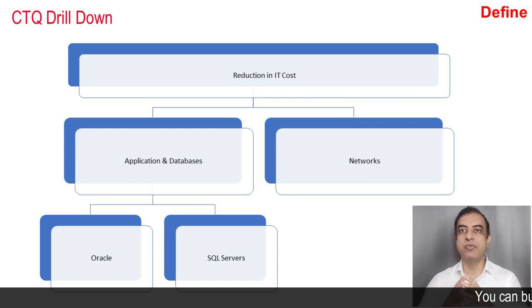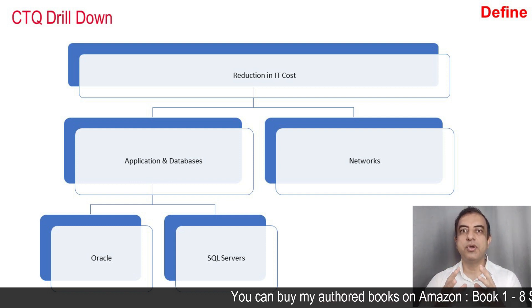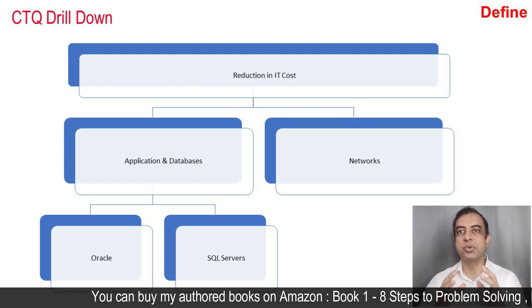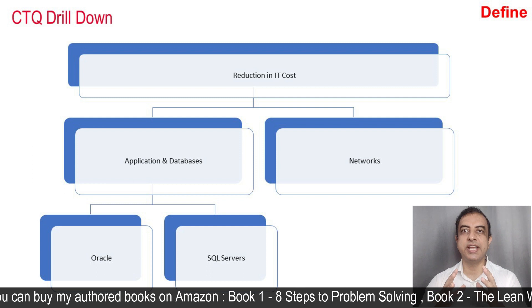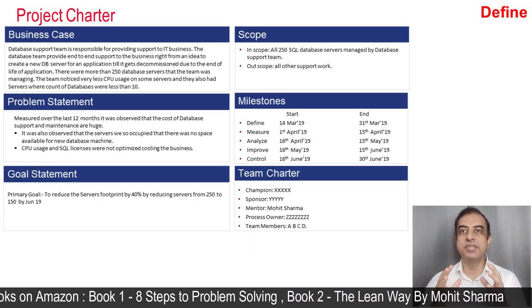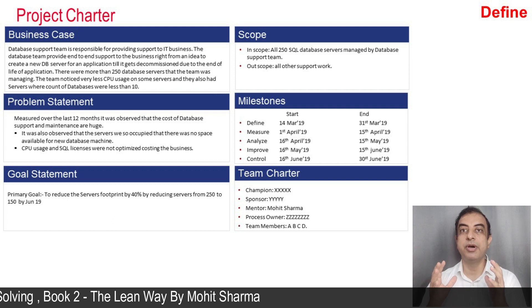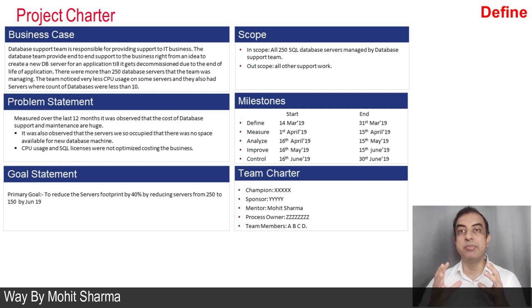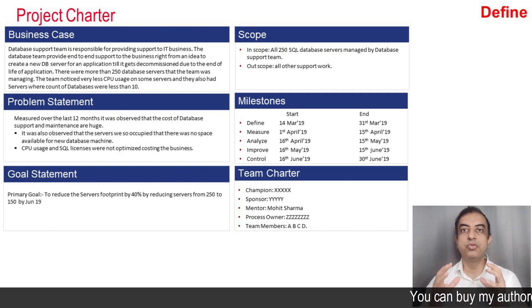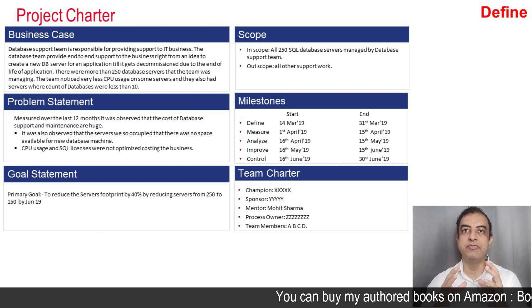In a hospital in a metro city, management took a three to five year goal of reducing the IT cost by 20%. For that, they set up a team of quality professionals to identify the opportunity areas. The first step the team performed was to understand the company's objectives and drill down those objectives to identify the project goal. The goal was to reduce expenses of the IT department, so cost reduction in SQL servers was considered as the project goal. Teams studied data over the last 12 months and observed that the cost of database support and maintenance was huge — to the tune of 2.5 million per annum. So the team took a goal to reduce the server footprint by 40%, reducing the server count from 250 to 150 by June 2019.